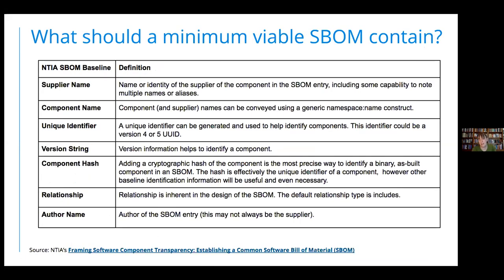From the NTIA discussions, a minimum viable SBOM should contain: a supplier name (who produced it), what the component actually is in some sort of generic namespace, and some way of uniquely identifying that specific component - be it a version number, a hash, or some sort of global namespace with a relative index. There are multiple ways of doing it. We need some way of understanding that if you're referring to a component, there's a unique way of referring to it - be it a package URL, be it a CPE - something that is definitive within a namespace.